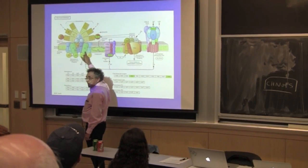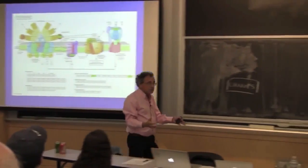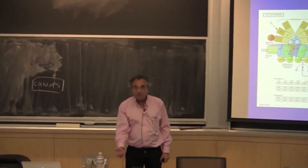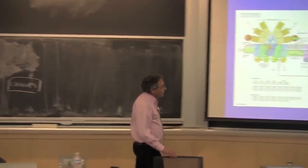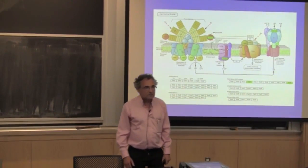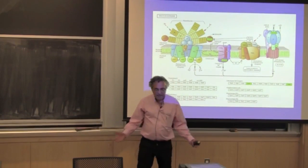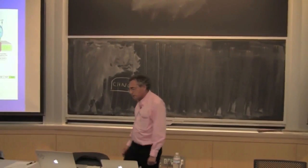A photon comes into this machine and pops an electron off a chlorophyll molecule. The electron goes to a very electronegative place, then is moved downhill to other carriers so it doesn't back-react. Now I've got an oxidized chlorophyll molecule — not a happy camper. It searches around: where can I get another electron? There's a tyrosine sitting in the protein — pop an electron off the tyrosine. The tyrosine is now unhappy, looks around, and sees a couple of manganese atoms sitting right there.